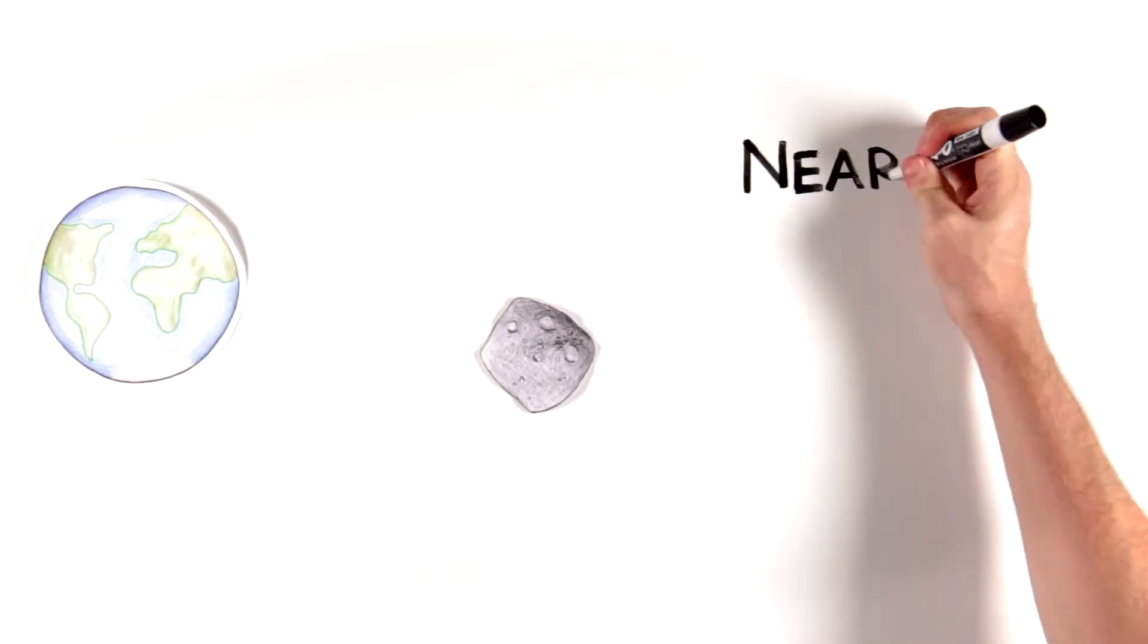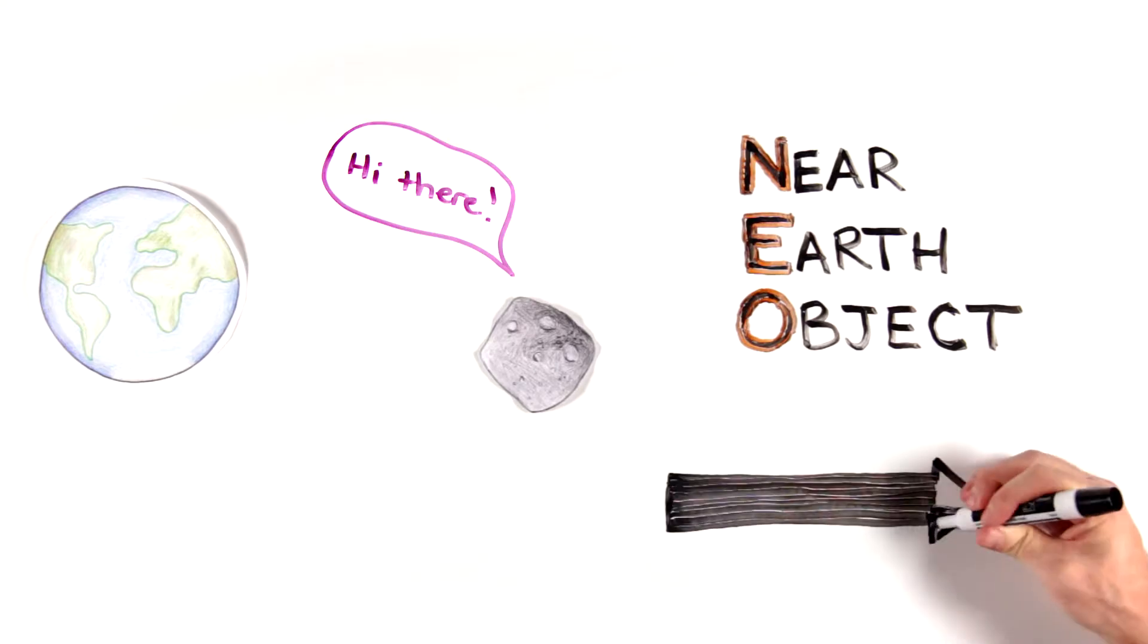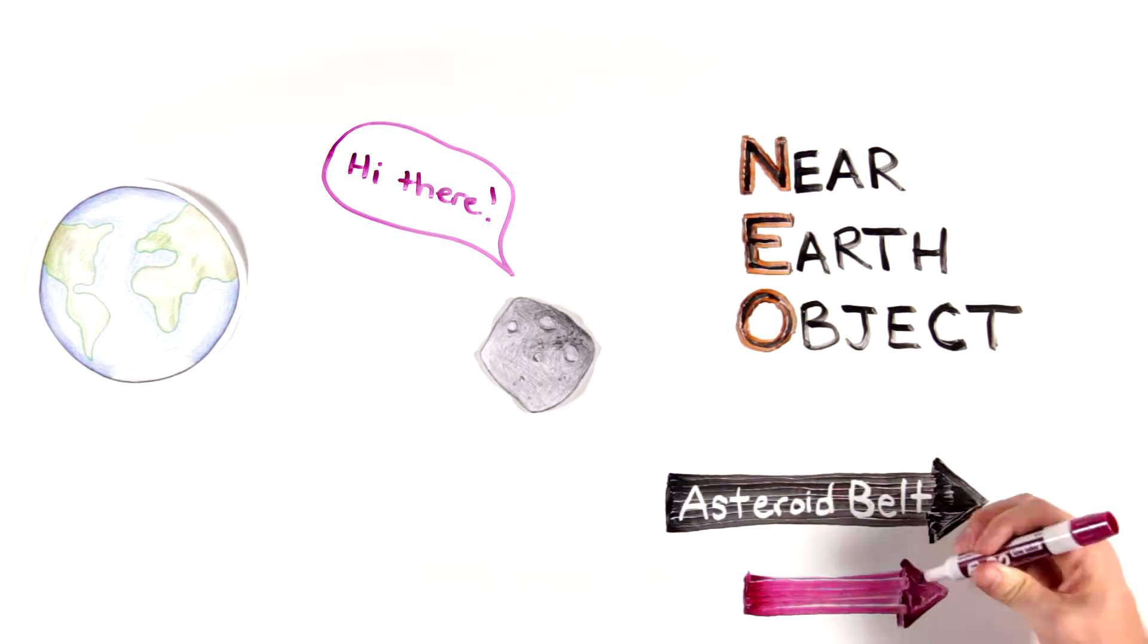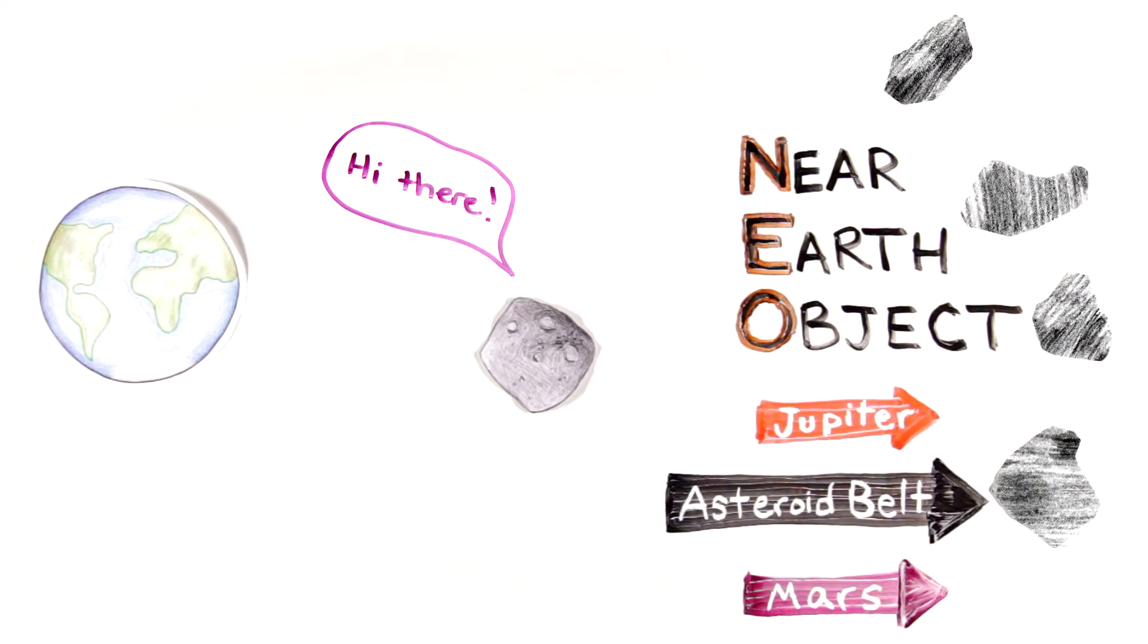Bennu is called a near-Earth object because it has an orbit that brings it close to Earth. Most asteroids aren't very close to the Earth. They live in the asteroid belt between the orbits of Mars and Jupiter. But some asteroids, like Bennu, slip out of the asteroid belt and become near-Earth objects.